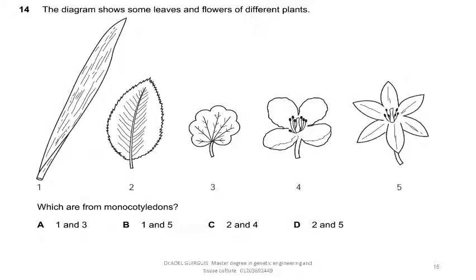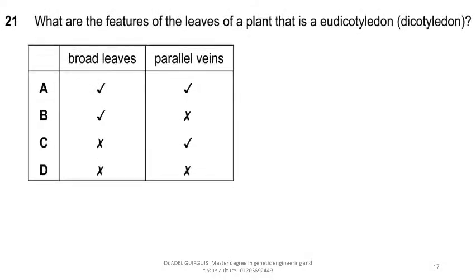A diagram shows leaves and flowers of different plants. Question: which are from monocotyledons? Options: A) 1 and 3, B) 1 and 5, C) 2 and 4, D) 2 and 5. The answer is B, where 1 is a narrow leaf with parallel venation and 5 is a flower with 6 petals (a multiple of 3). Next question: what are the features of the leaves of a eudicotyledon (dicotyledon)? Dicotyledonous leaves are broad with branched veins — not parallel — so the answer is B.